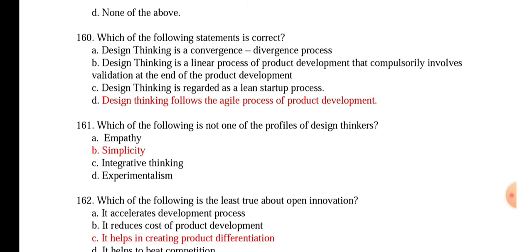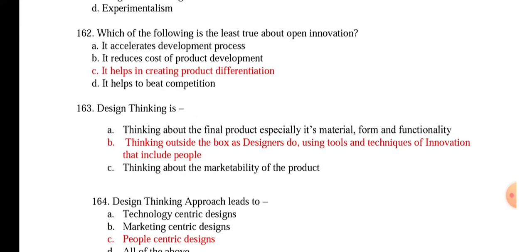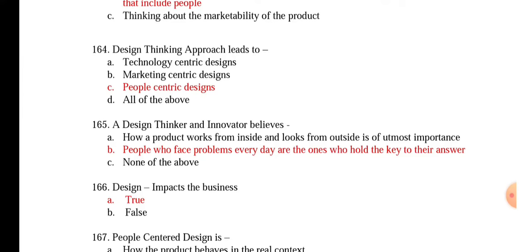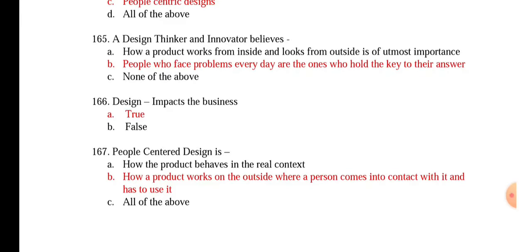Question 160: Which of the following statements is correct? Design thinking follows the agile process of product development. Question 161: Which of the following is not one of the profiles of a design thinker? Simplicity. Question 162: Which of the following is the least true about open innovation? It helps in creating product differentiation. Design thinking is thinking out of the box as designers do, using tools and techniques of innovation that include people. Design thinking approach leads to people-centric designs. A design thinker and innovator believes people who face problems every day are the ones who hold the key to their answers.